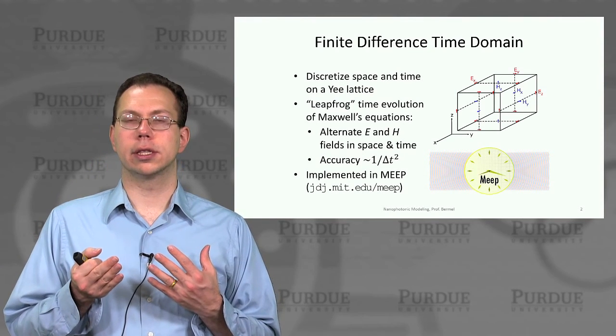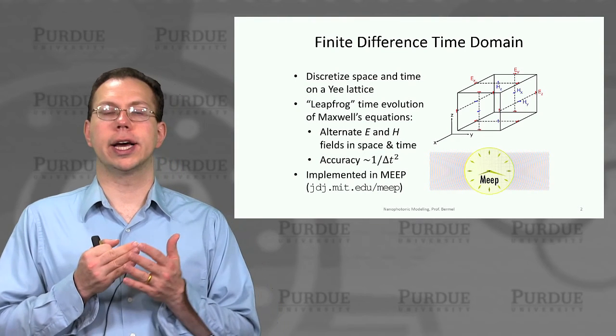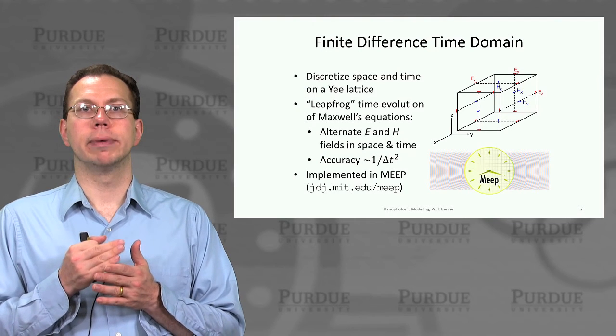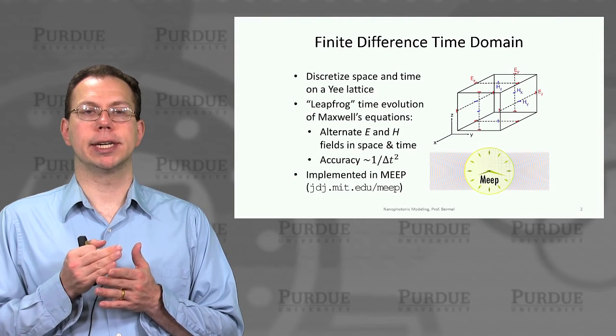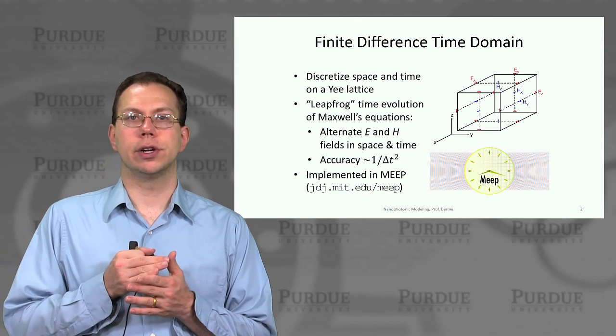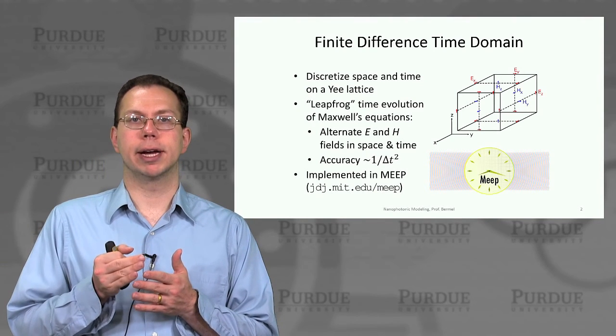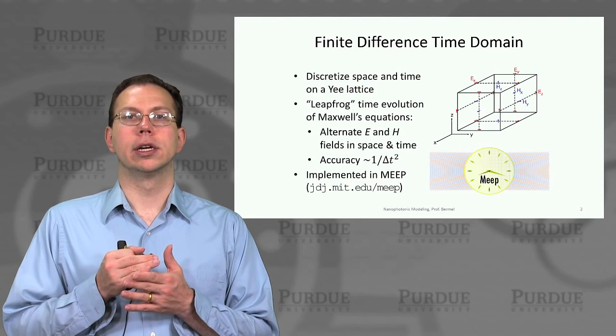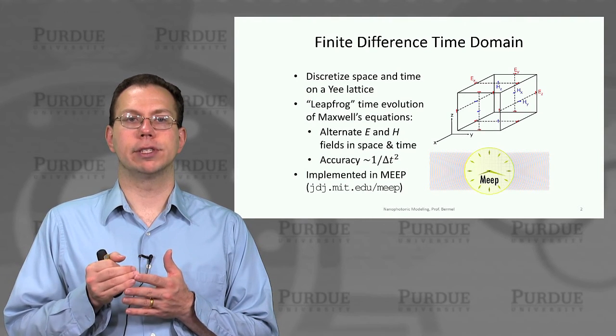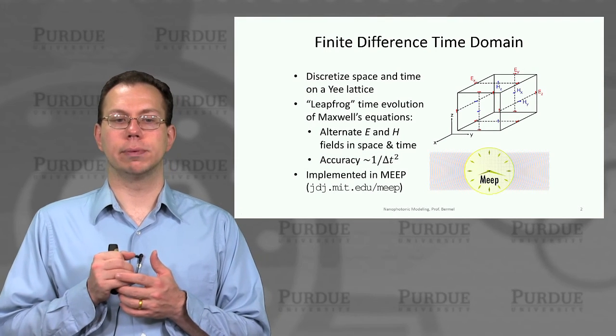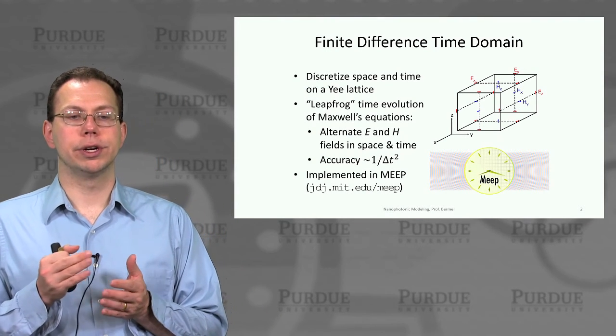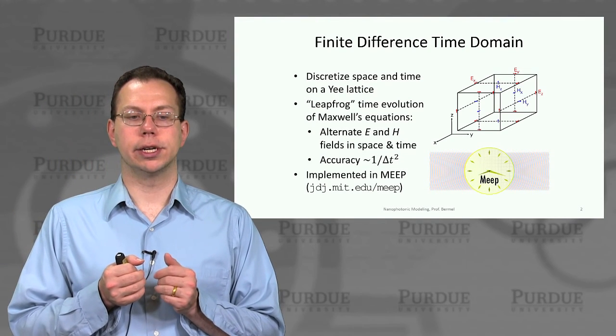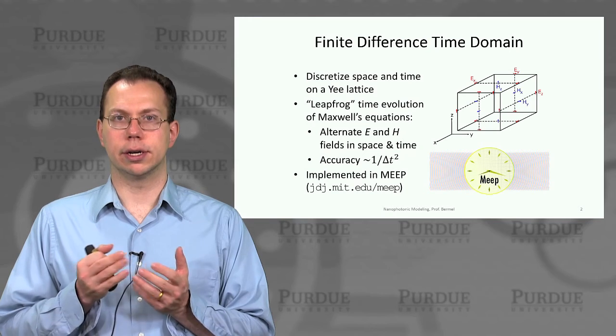The key thing is that you would actually alternate solving the electric and magnetic fields in time by stepping through half a time step between each. Since electric fields create magnetic fields and vice versa, you go back and forth. This is actually a very good approach for optics. As you reduce the increment of time, the accuracy goes up as 1 over delta t squared in principle.